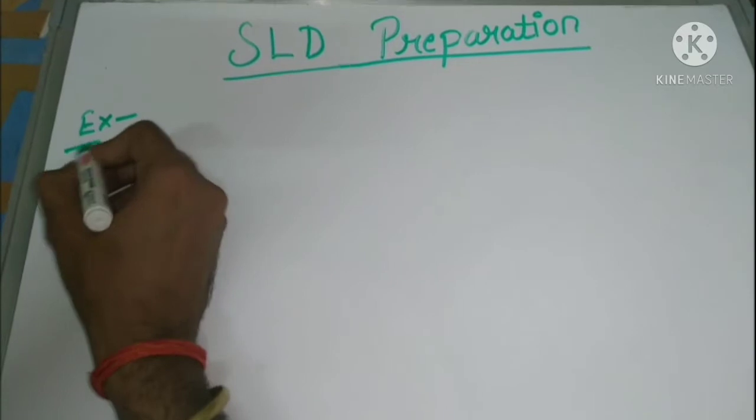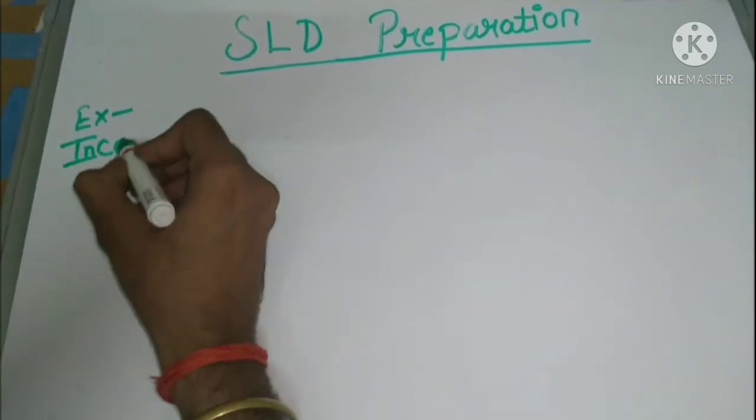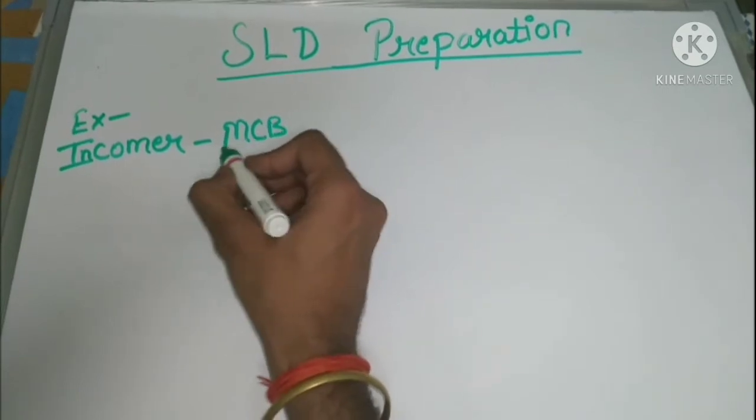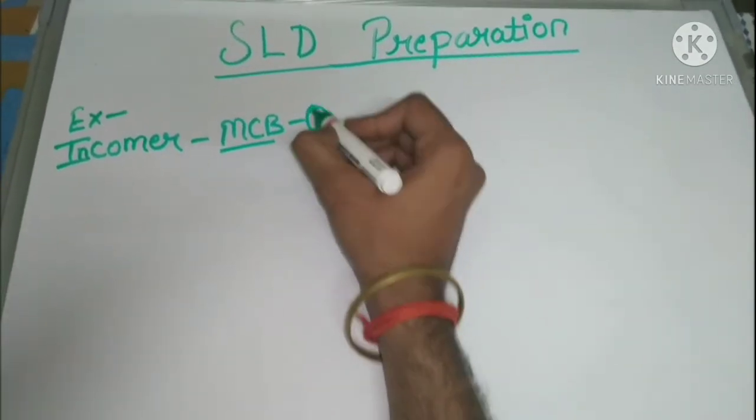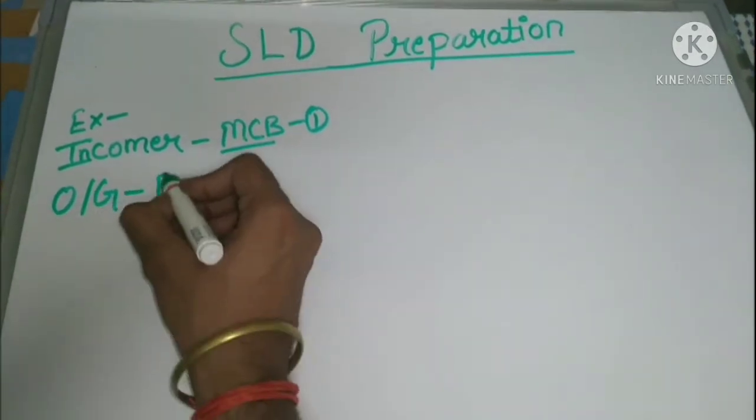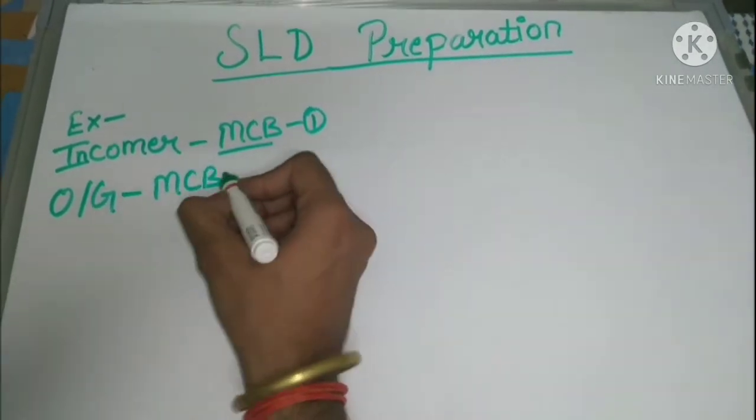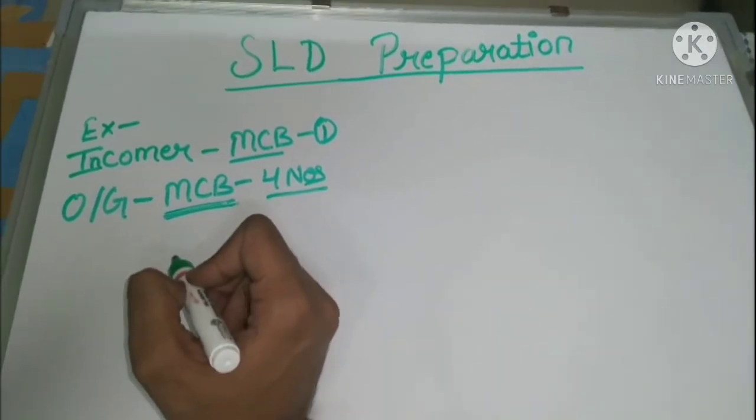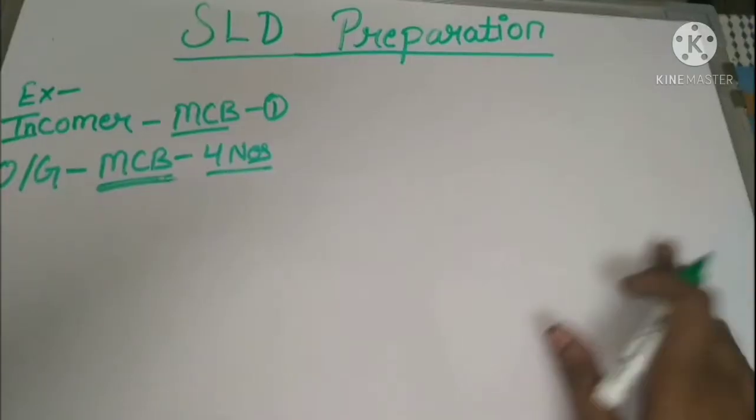Suppose we have an incomer, maybe of any rating. We are using MCB here. The quantity of incomer is 1, and we have 4 outlets, means the quantity of outgoings are 4 number. I am not using rating here because at this time we want to understand the definition of SLD. Let's draw.